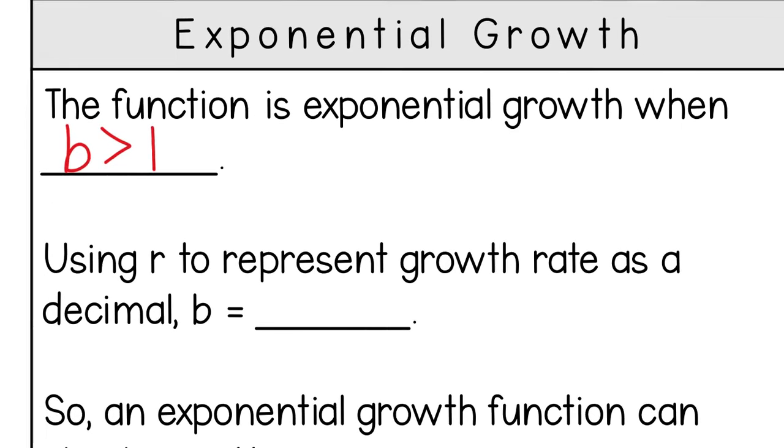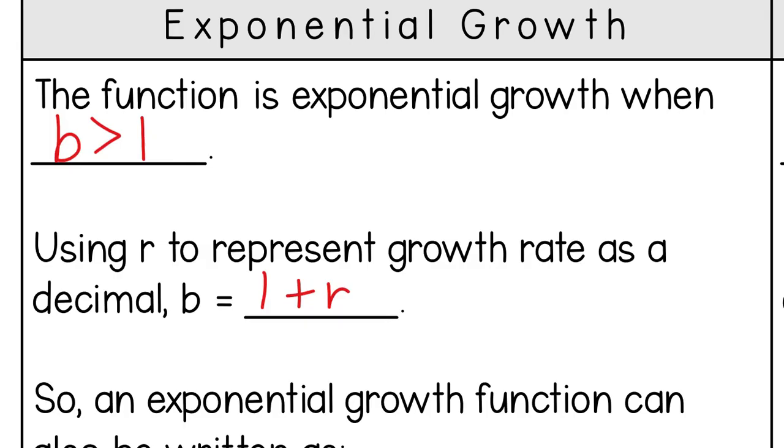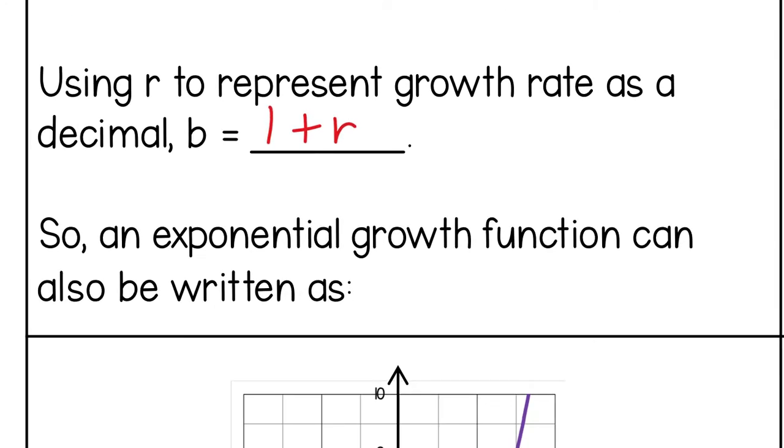But when we're dealing with word problems, a lot of time you'll see a percent, a rate. So using r to represent the growth rate as a decimal, you can also say that b would be equal to 1 plus r. That would make it bigger than 1. So that example that I said a while ago that your savings account gains interest at 5% each year, you would put 5% as your r and it would be 1 plus 5%. So because b can be written as 1 plus r, the entire function can be rewritten as y equals a, but instead of b, you can put 1 plus r in its place to the x power.